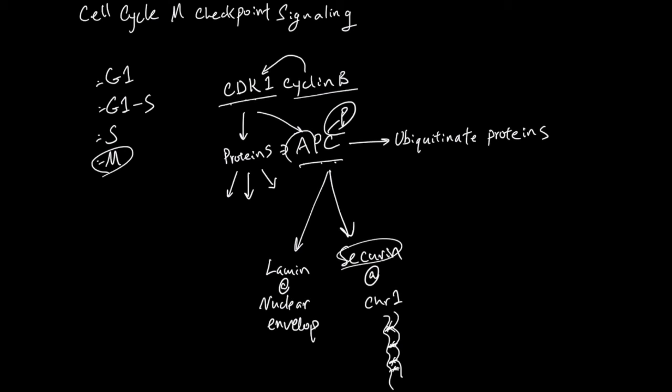And this is why APC is called the anaphase promoting complex, because in the metaphase, sister chromatids align, and in the anaphase, these sister chromatids will be pulled by the microtubules to segregate. If that happened, the securin must be gone.